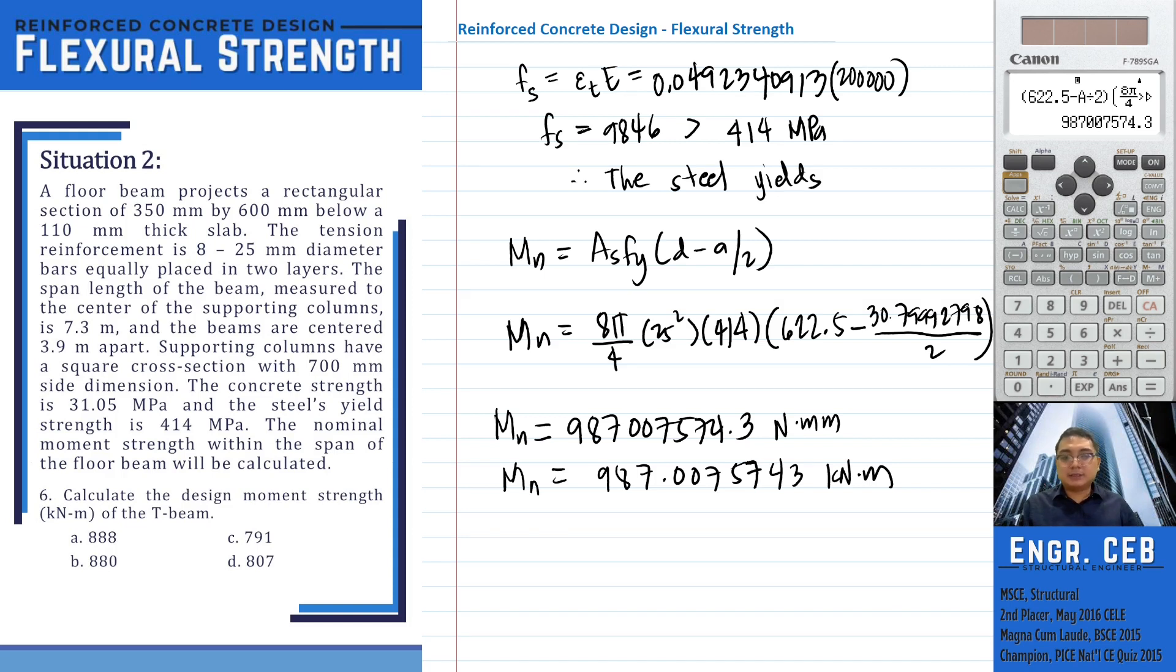Problem 6: Calculate the design moment strength of the T-beam. We already know the nominal moment strength, so we multiply it by 0.9. That's 0.9 times 987, giving us the design moment strength of 888.3068169 kilonewton-meters. That is letter A.